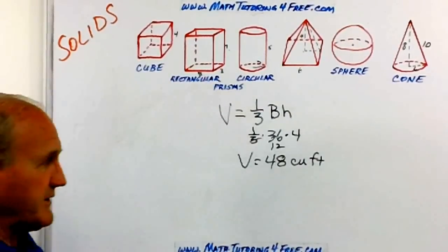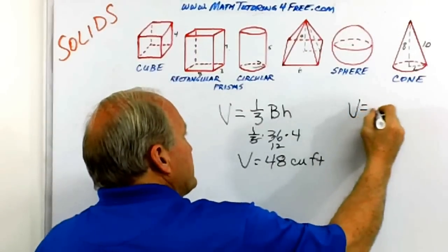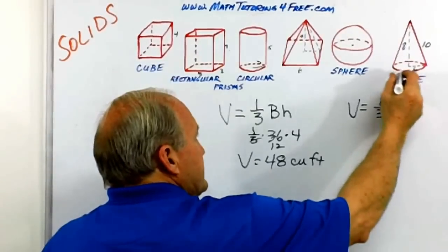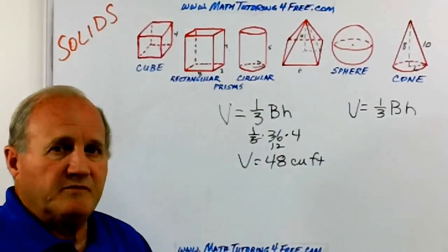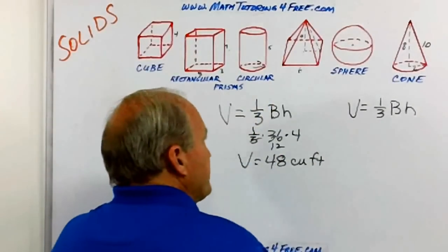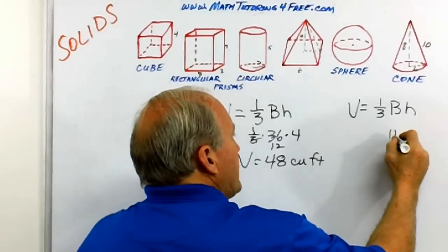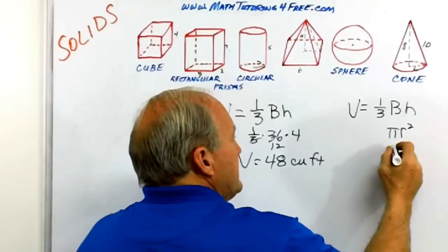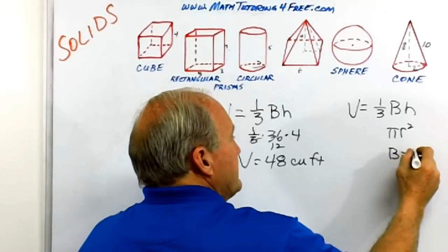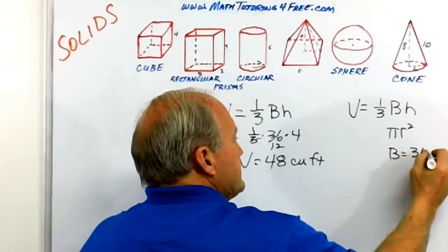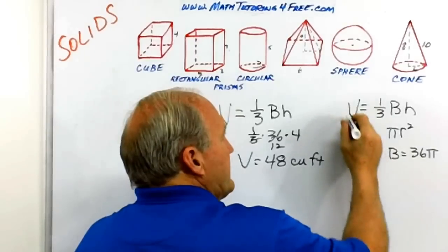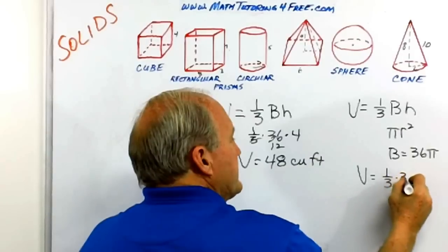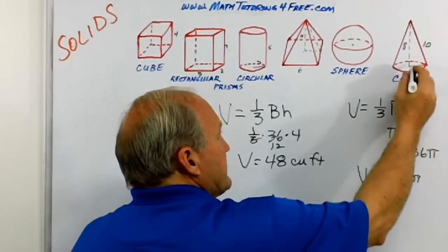The cone, no different. The volume is equal to one third of the area of the base times the height. In this case, the base is not a square as in the pyramid, but a circle. What's the formula for the area of the circle? Pi R squared. In this case, R was six, so capital B is equal to pi R squared. That would be 36 pi.